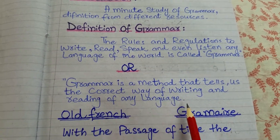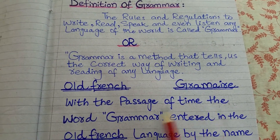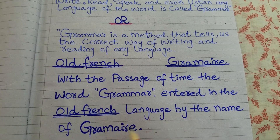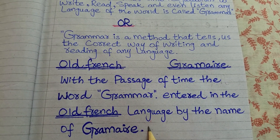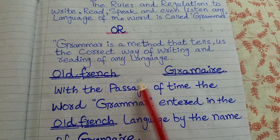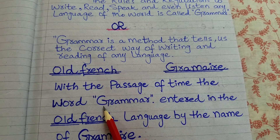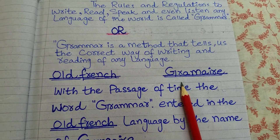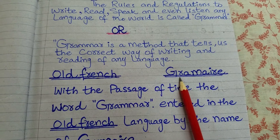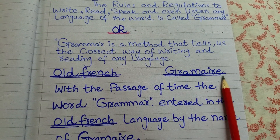The word grammar comes from Old French. With the passage of time, the word entered into Old French language by the name of 'grammaire.' It then entered into English, and eventually changed and converted into the word 'grammar.' The spelling in Old French was G-R-A-M-A-I-R-E.